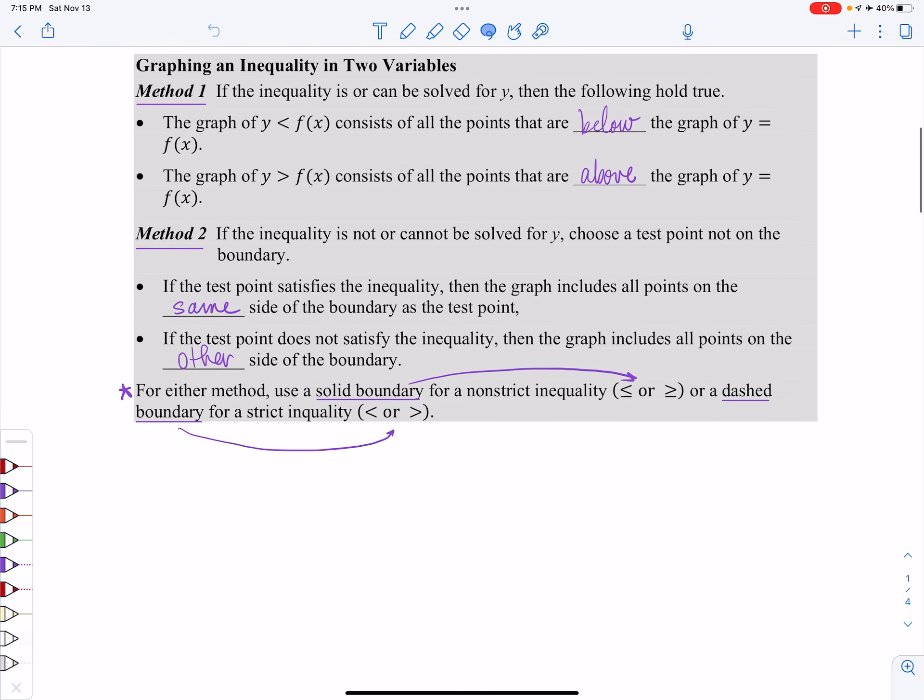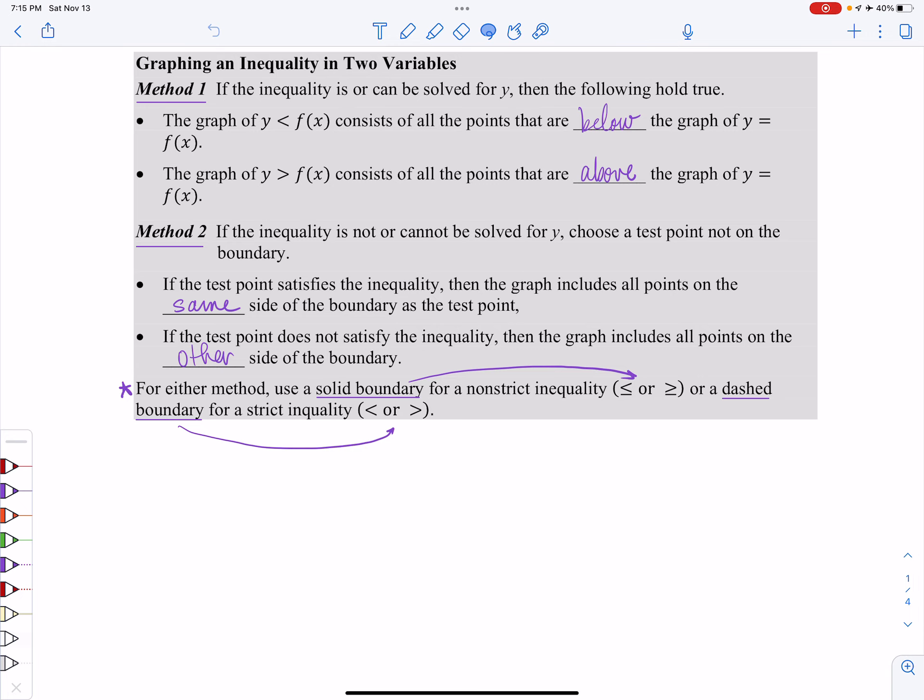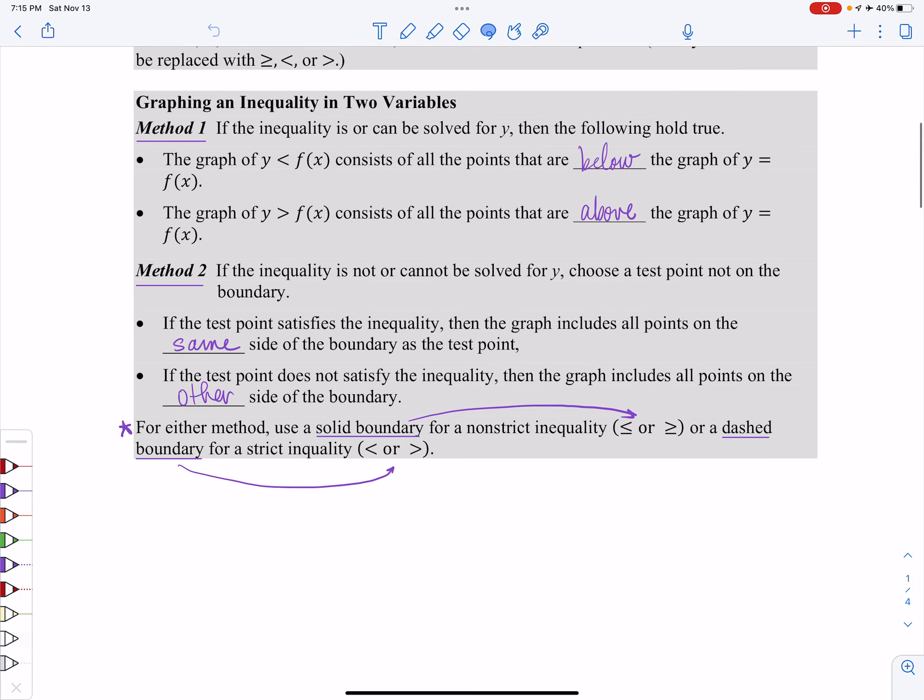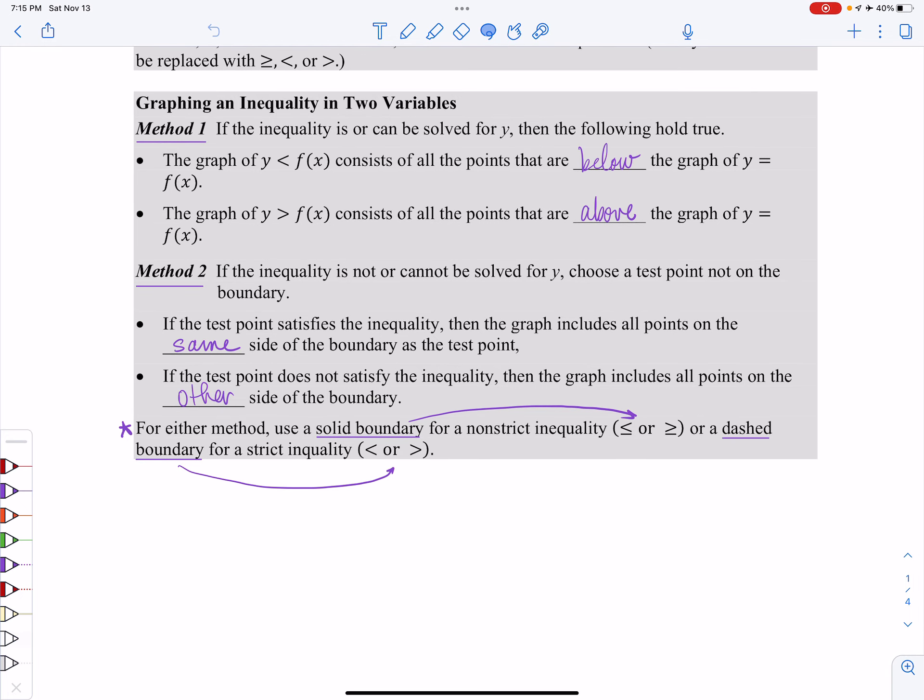If you're going to graph an inequality that has two variables, there's two different methods of doing this. Method number one says that if my y is alone, and that's key here, my y needs to be alone. If my y is less than, then we're going to shade all the places below the graph. If it's y is greater than, then we'll be shading all of the points above the graph. And I'll show you exactly what I mean by that here in just a moment.